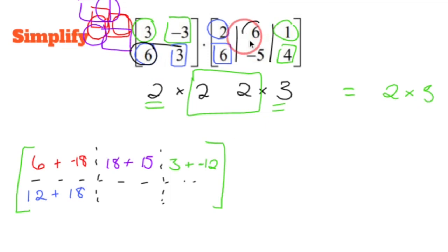6 times 6 is 36. We're now in the second row, second column. 6 times 6 is 36. 3 times negative 5 is negative 15. So I could put plus negative 15, but maybe I will for consistency sake. And then 6 times 1 is 6 plus 3 times 4 is positive 12.